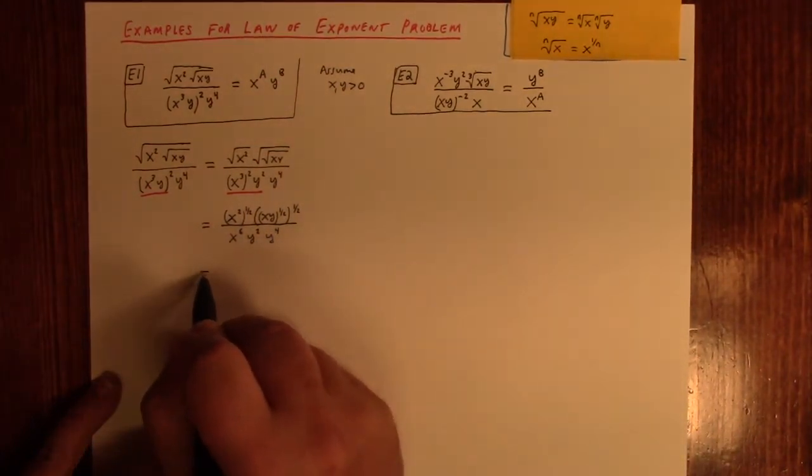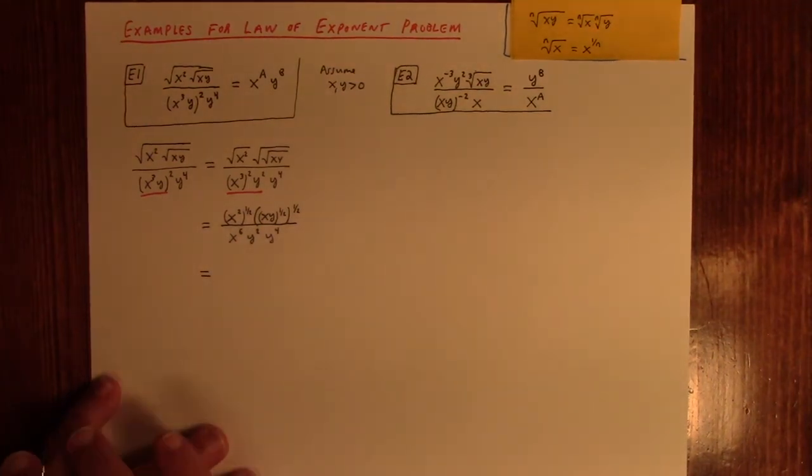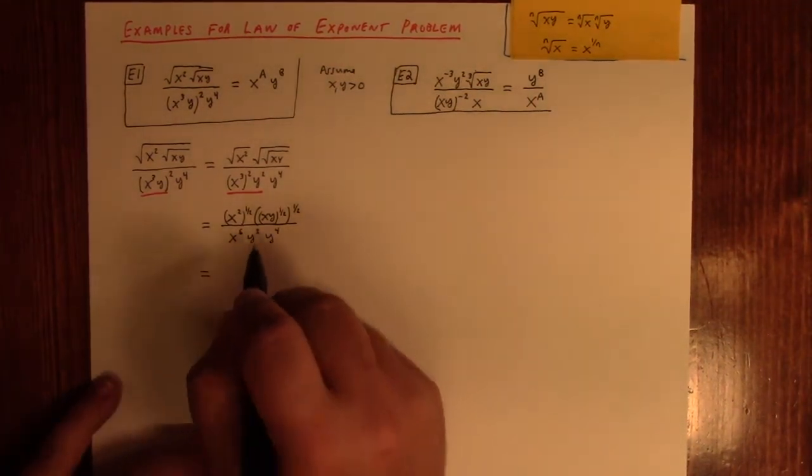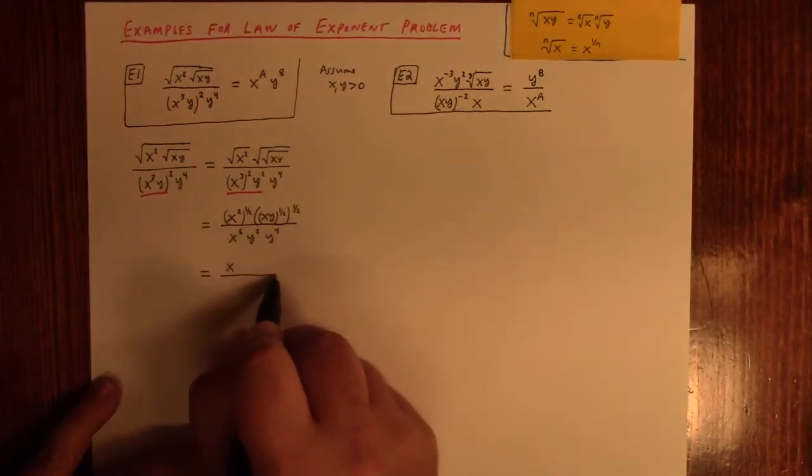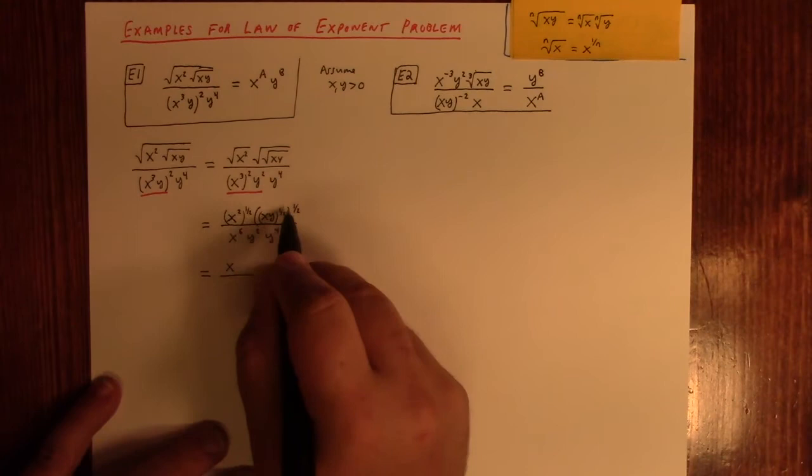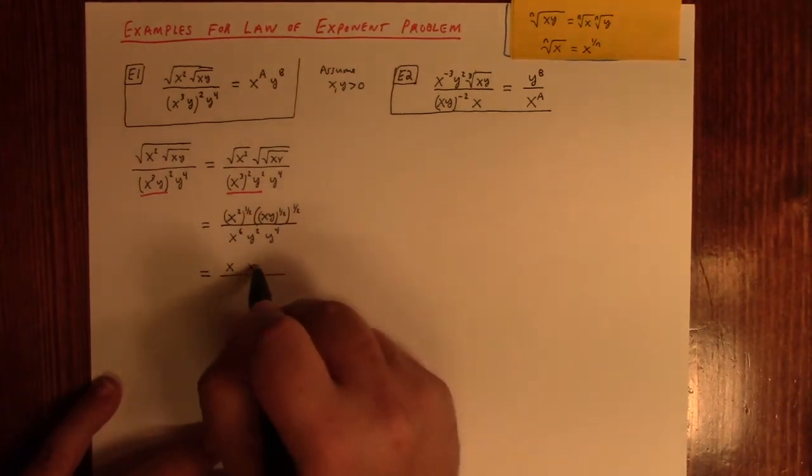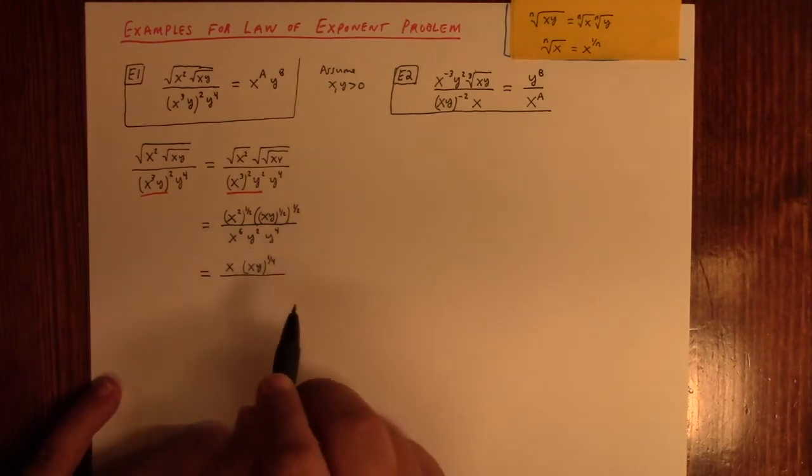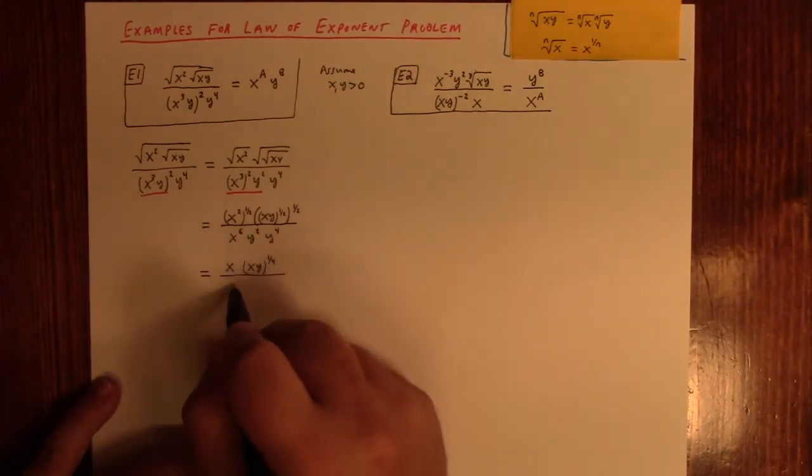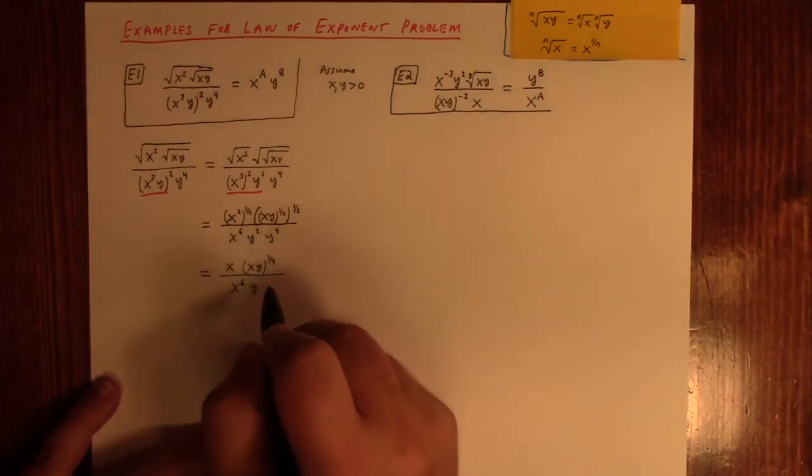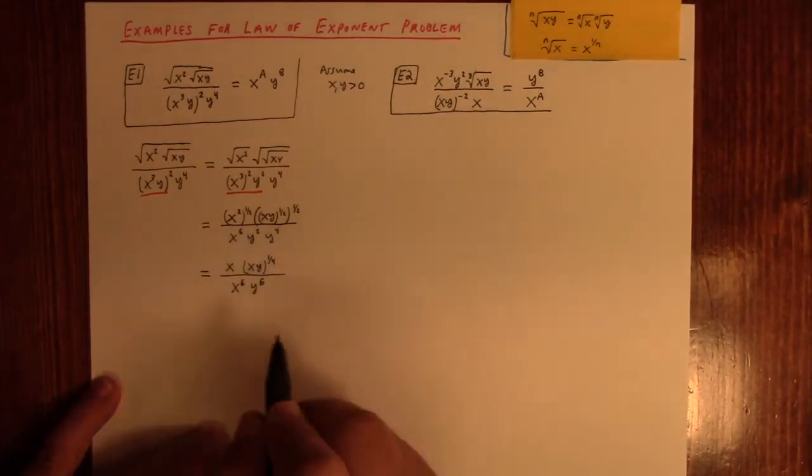All right. Now, what next? Okay, so let's, 2 times 1 half is just x. And this would be, 1 half times 1 half is what? It's 1 fourth. And let's see here. Downstairs, we can clean that up. That's x to the sixth. Times y to the 2 plus 4, which is 6. Right?